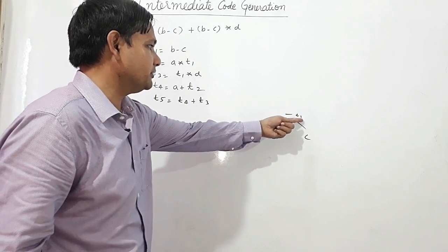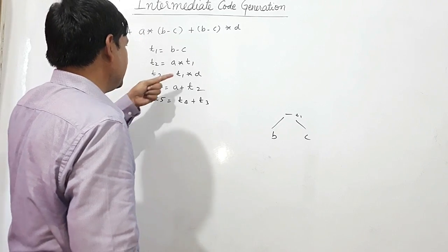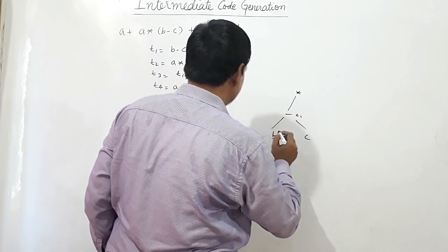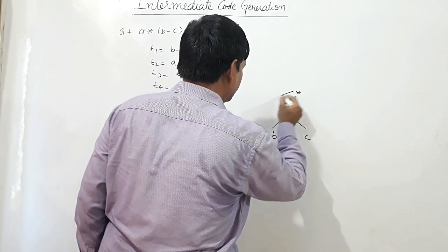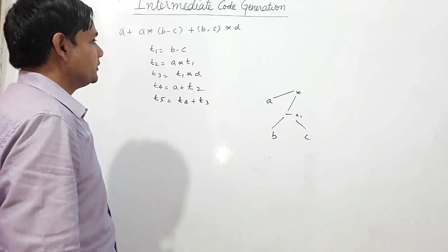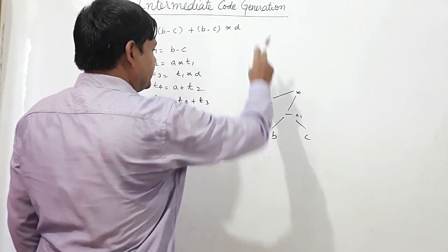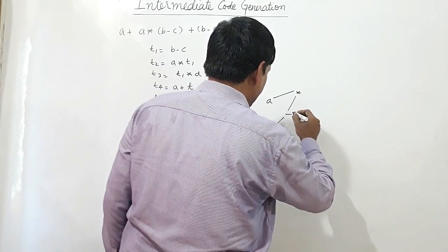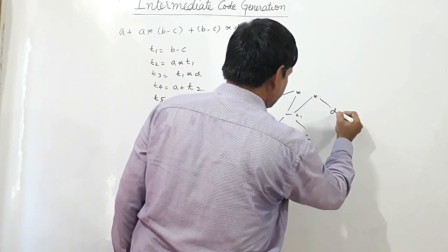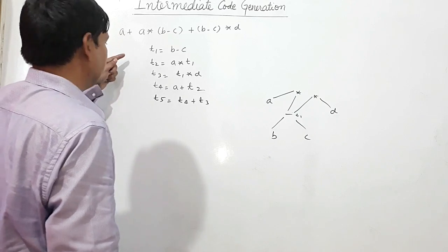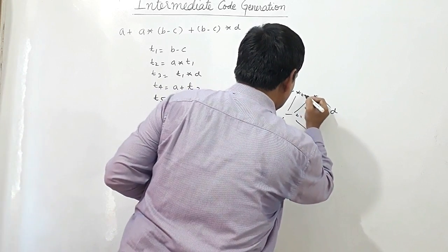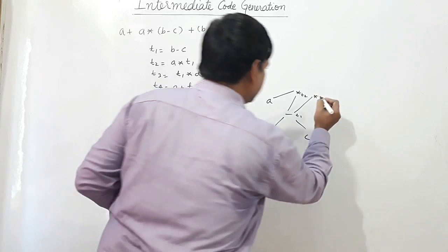b minus c is in t1. Now I am multiplying a with t1, taking the result of t1 and multiplying it with a. Now b minus c into d: b minus c is already in t1, and I am computing t1*d. So a*(b-c) is stored in t2, and t1*d is stored in t3.